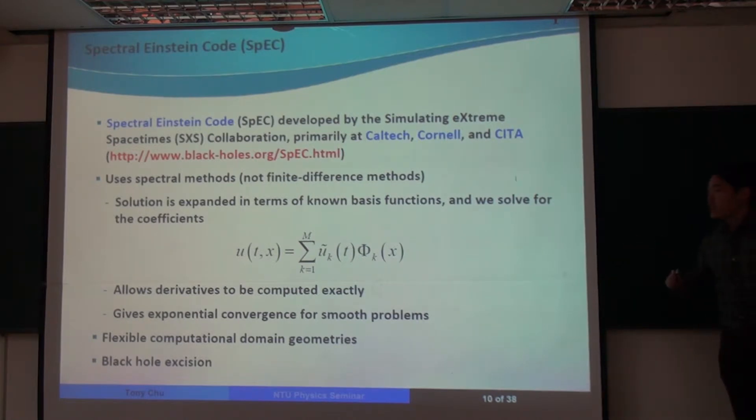So here are some details about the actual code that I use. It's called the spectral Einstein code, or SPEC for short. And it's developed by a collaboration that I'm in, called Simulating Extreme Spacetimes, or the SXS collaboration. The work on this code has primarily been at Caltech, Cornell, and CITA, where I currently am right now. You can find more information about our code on blackholes.org.